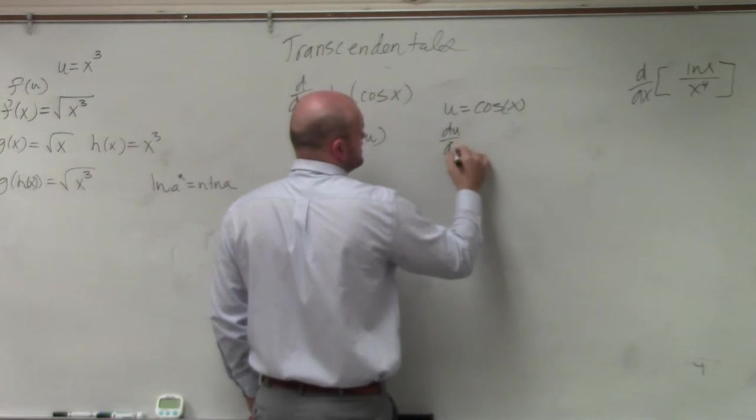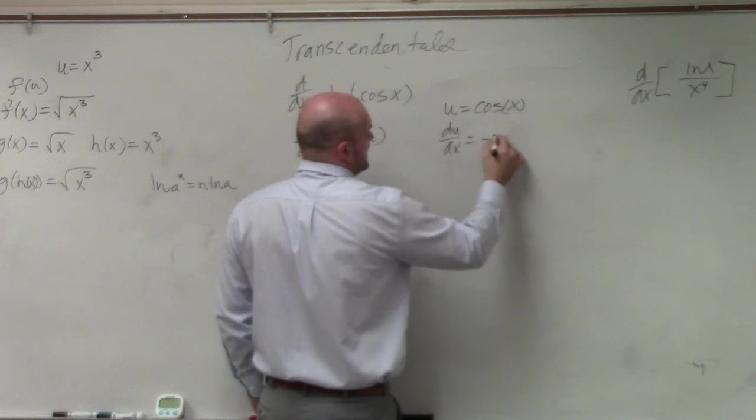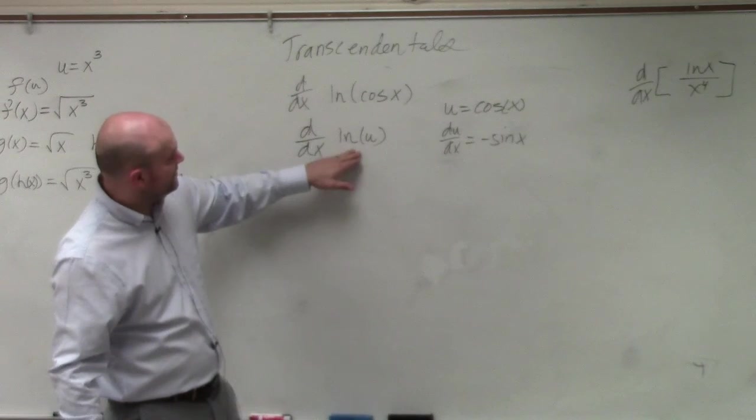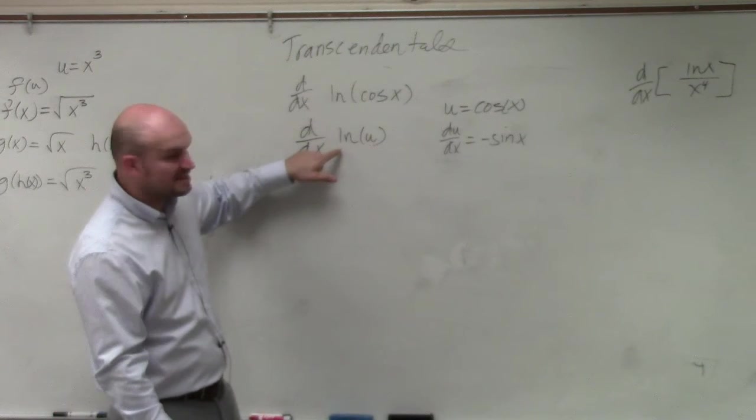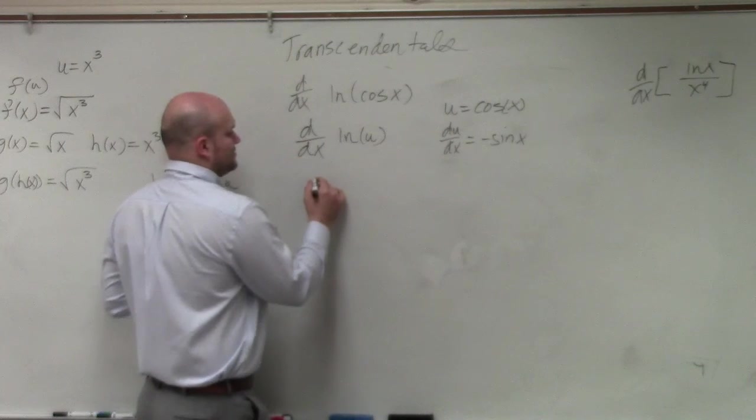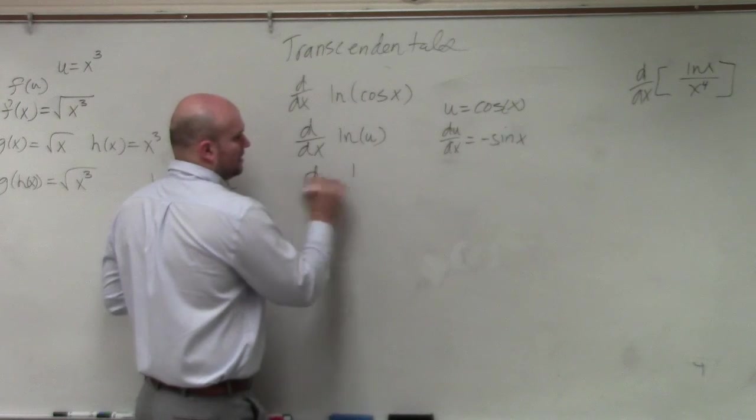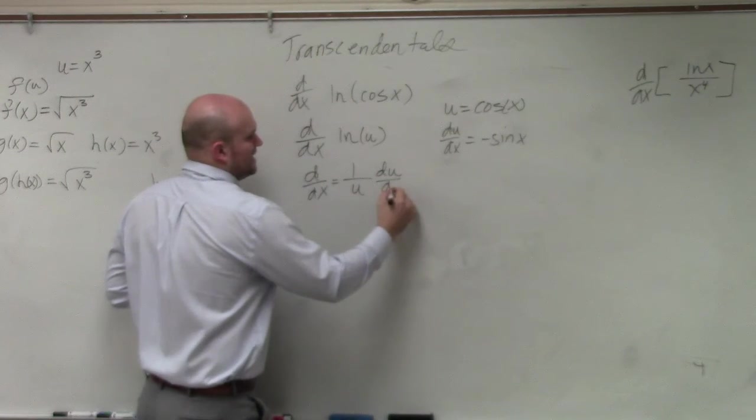So therefore, du dx is equal to negative sine of x. Then again, taking the derivative of implicit differentiation of this is going to be d over dx is equal to 1 over u times du dx.